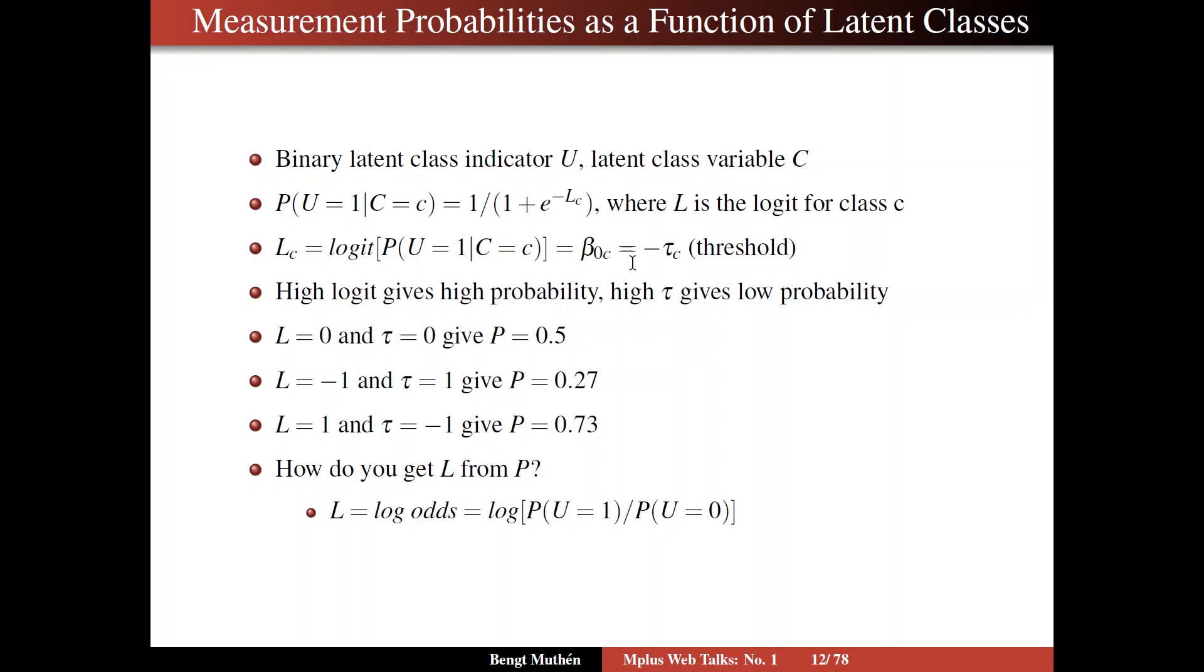In Mplus, you instead work with thresholds, because they are more general and can handle ordinal variables, so more than two categories, so you can have more than one threshold, and they are the same as the intercept, but with a negative sign.